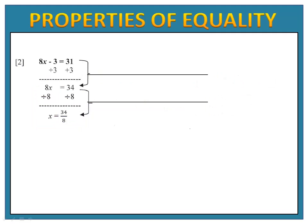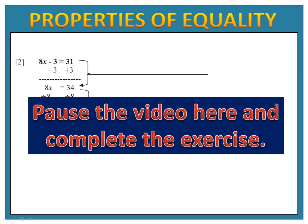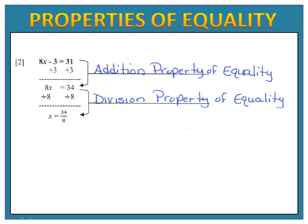Exercise 3 is for you to try. You're given an equation and we'd like you to identify the property used in each step. Our first step was to add three to both sides — that's the addition property of equality. Our second step was to divide both sides by eight — that's the division property of equality. That gave us x equals 34 eighths, which makes a true number sentence.